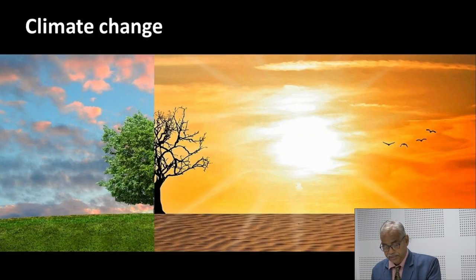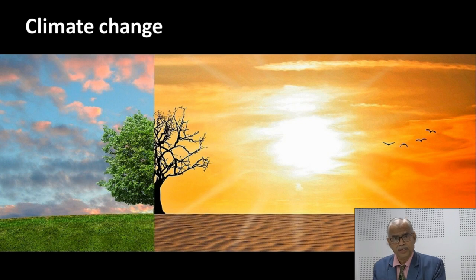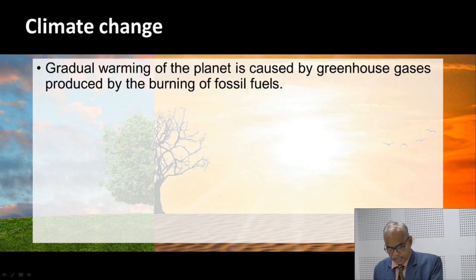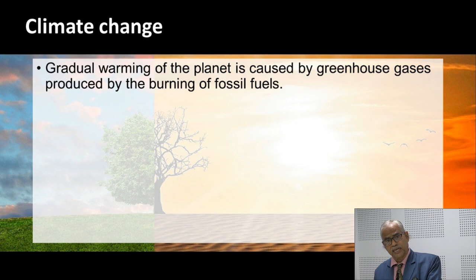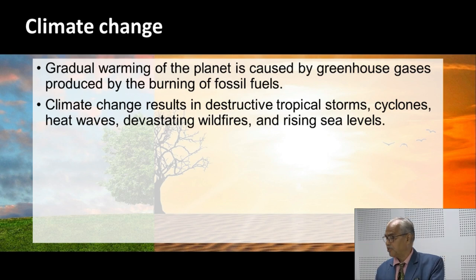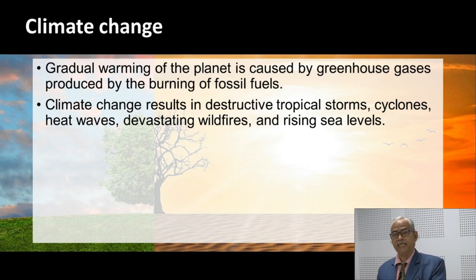First we will focus on climate change. Because of an unhealthy living system and extreme exploitation of natural resources, the gradual warming of the planet is caused by greenhouse gases produced by the burning of fossil fuels. The use of fossil fuels for generating energy is going to be a dangerous phenomenon for our sustainability. Climate change results in destructive tropical storms, cyclones, heat waves, devastating wildfires, and rising sea levels.